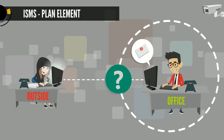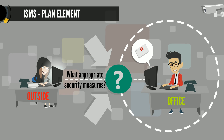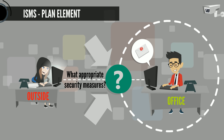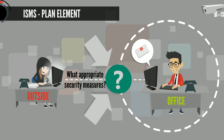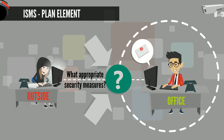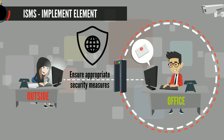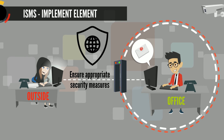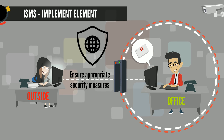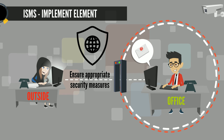The objective of the Plan element of the ISMS is to devise and recommend the appropriate security measures based on an understanding of the requirements of the organization. The objective of the Implementation element of the ISMS is to ensure that appropriate procedures, tools and controls are in place to underpin the information security policy.